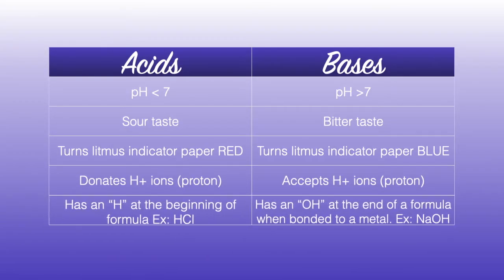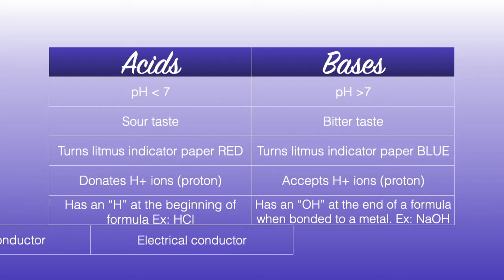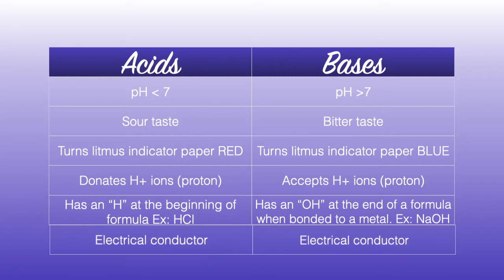Acids tend to have an H at the beginning of a formula — for example, hydrogen chloride — whereas bases tend to have an OH at the end of a formula when bonded to a metal, for example sodium hydroxide. Both acids and bases are electrical conductors.